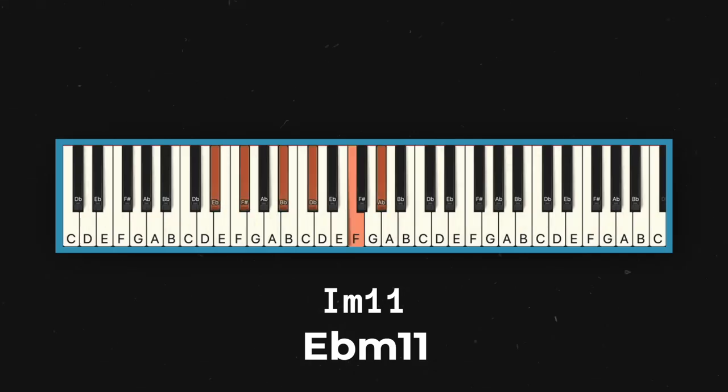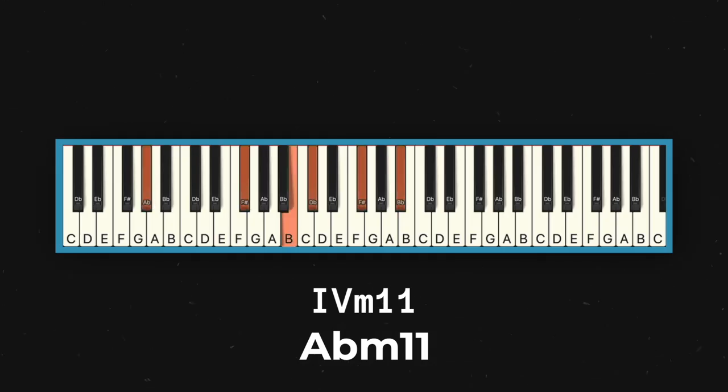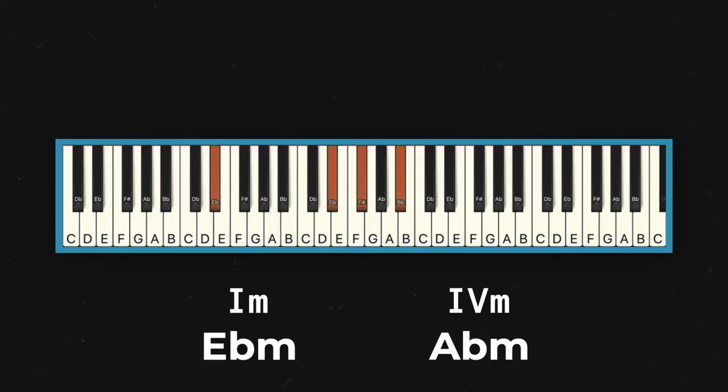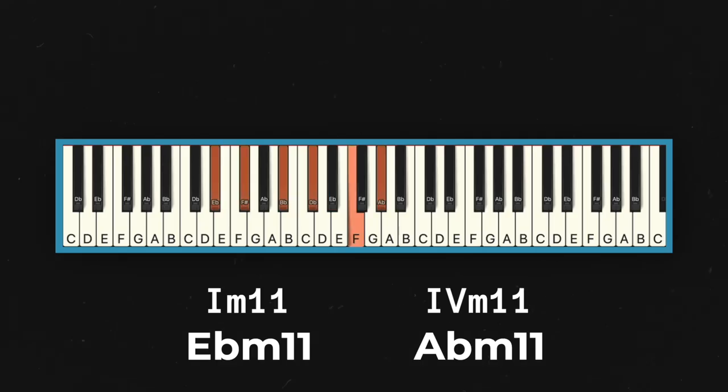It starts on the I chord, Eb minor 11, and then goes to the IV chord, Ab minor 11. Now going from the I to the IV is pretty standard, but because the voicings have so much color, it sounds fresh and soulful. Here's what it would sound like with just a basic Eb minor and Ab minor chord. Now let's add back those 7ths, 9ths, and 11ths.